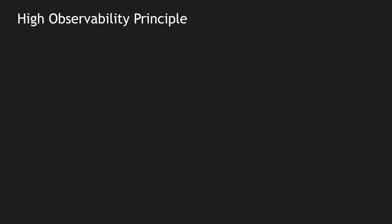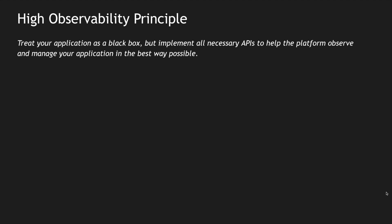Now that we spoke about monitoring and logging options, let's discuss the high observability principle. If you don't know what observability is, do take a look at my video on that. The principle states that your application needs to be treated as a black box, so that you can implement all the necessary APIs which the platform can observe. Generally we are talking about the container orchestration platform, so that it can connect to different APIs your application uses and understand how the application behaves.